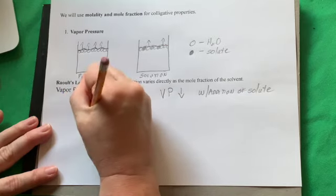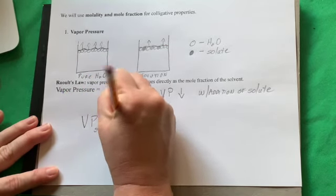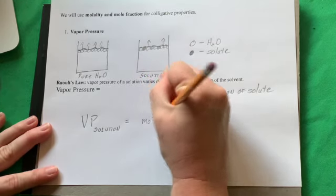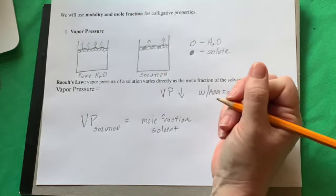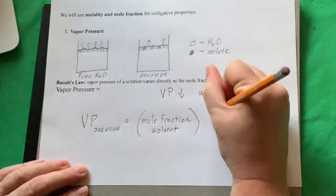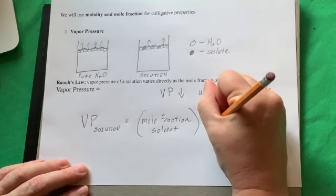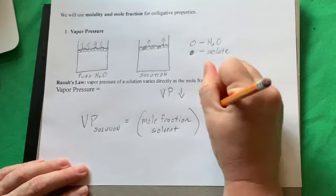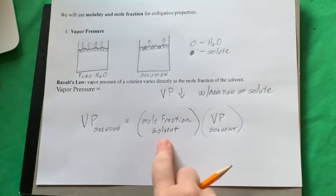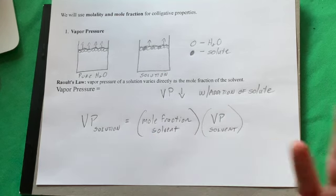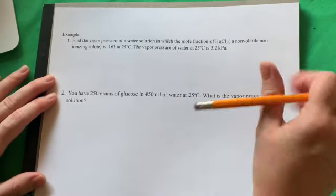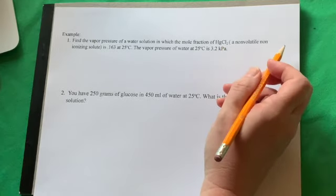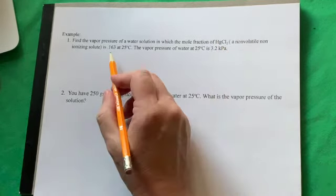Mathematically, the vapor pressure of your solution equals the mole fraction of your solvent times the vapor pressure of the pure solvent (in our case, water). For example, if 0.9 is your mole fraction, multiply 0.9 by the vapor pressure of water. Here's an example: find the vapor pressure of a water solution in which the mole fraction of HgCl₂, a non-volatile non-ionizing solute, is 0.163. The vapor pressure of water at 25°C is 3.2 kPa.